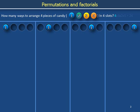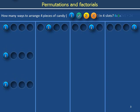In each of these cases, the second piece of candy, colored green, can now only be placed in three possible positions: left, middle, and right.